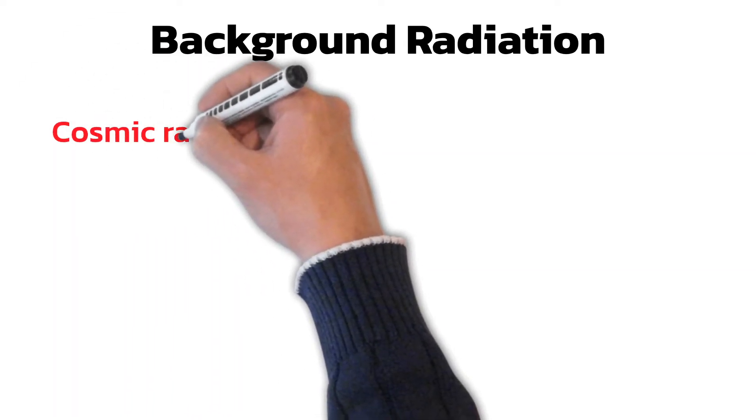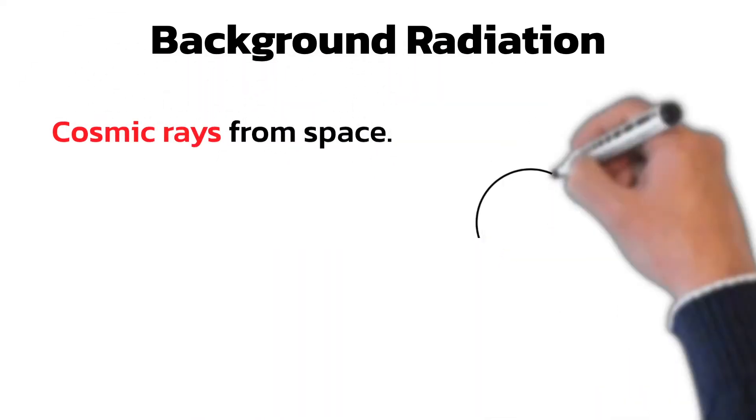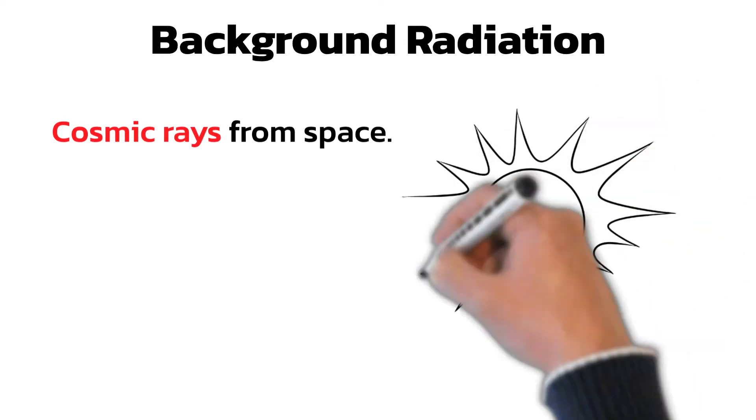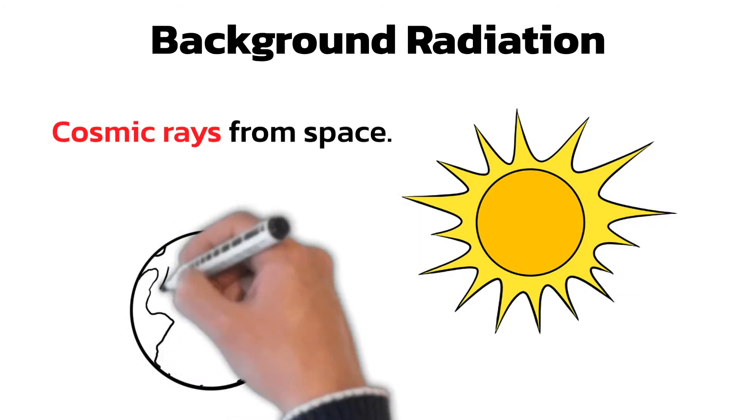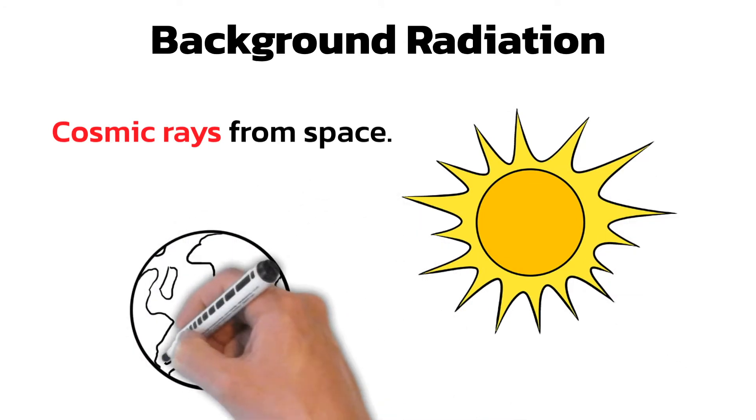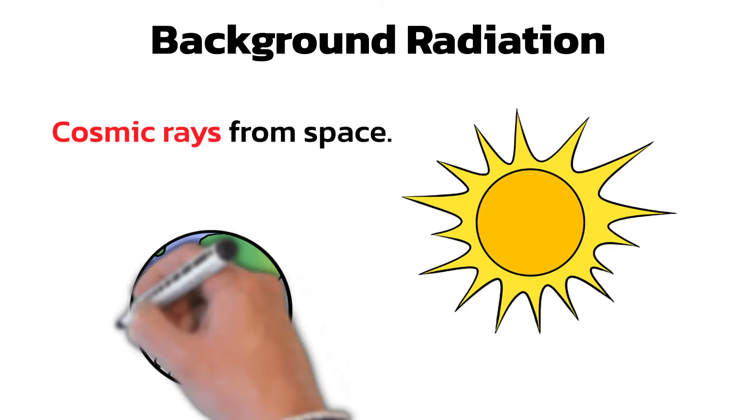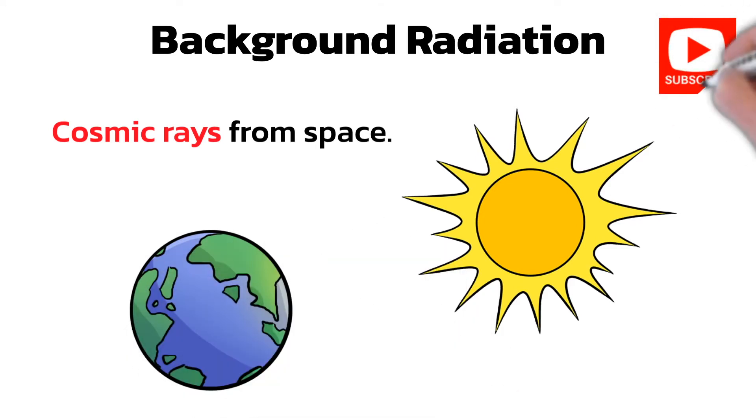Background radiation comes from many sources including cosmic rays from space. Most of this radiation is from the sun but thankfully the earth's atmosphere and magnetic field protects us from most of the dangers of this cosmic radiation. About 10% of all background radiation is from cosmic rays.